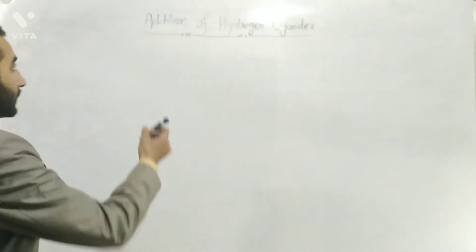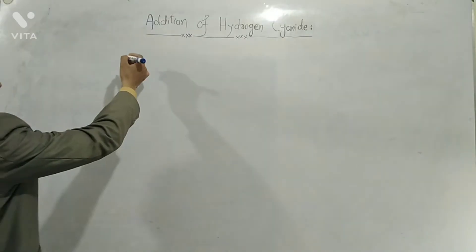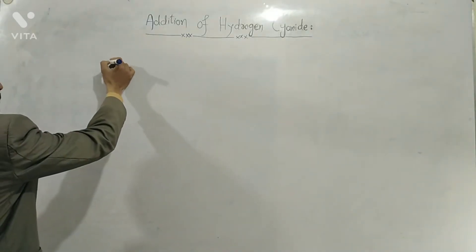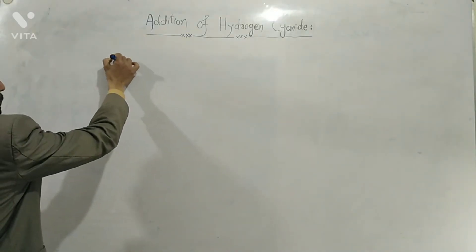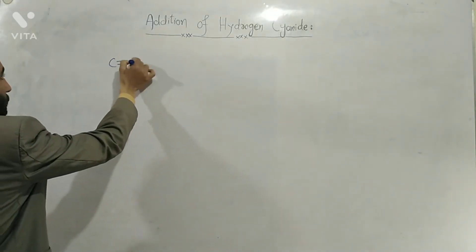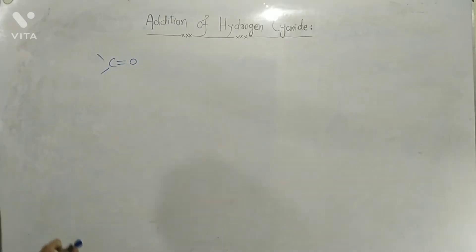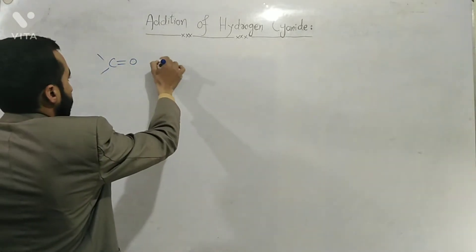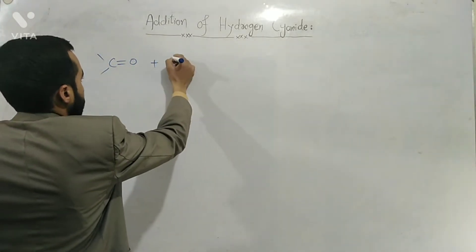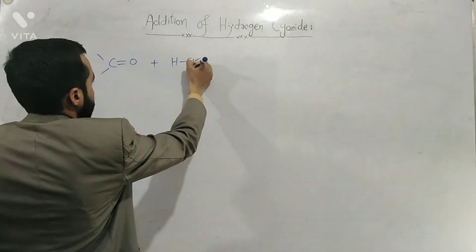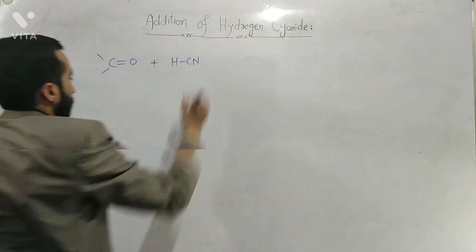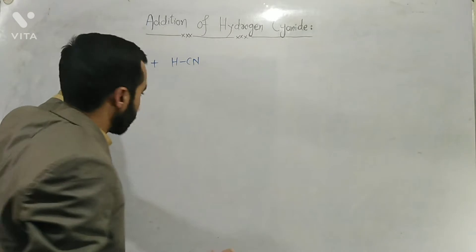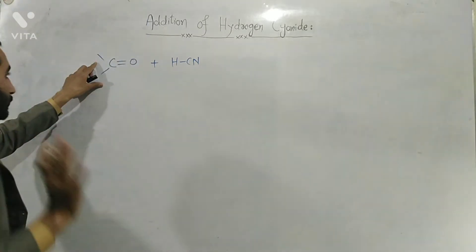Our today's topic is the addition of hydrogen cyanide in carbonyl compounds. Suppose I have a carbonyl compound — we will see how hydrogen cyanide is added. This is hydrogen cyanide, and this is the carbonyl compound. Aldehydes or ketones can be used.